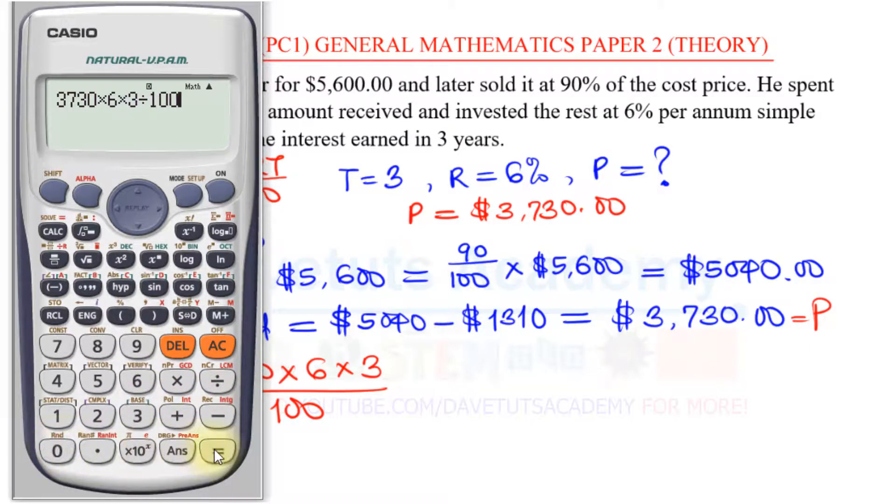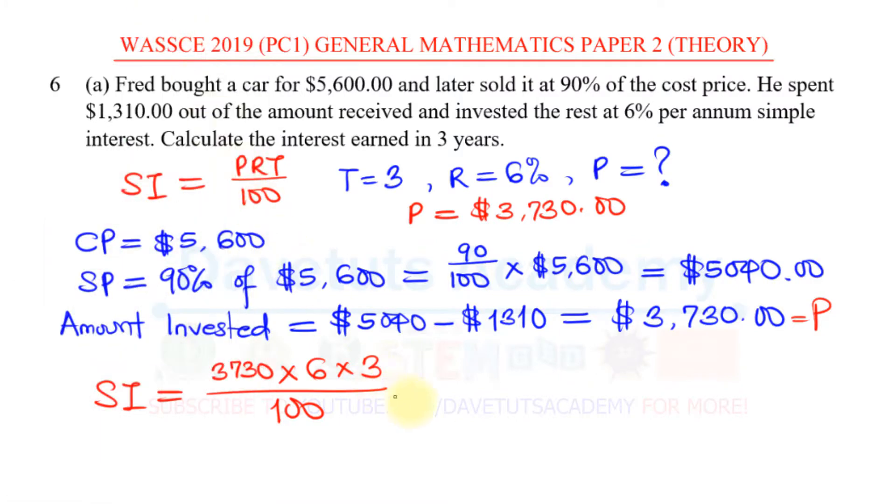That is 671.4. So the interest earned in 3 years for Fred is nothing but $671.40. Having the understanding of how to reverse engineer to get this principal helped us to solve this question, and the answer is $671.40.